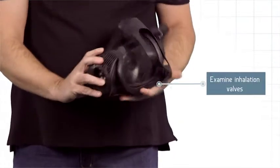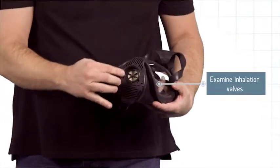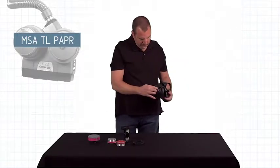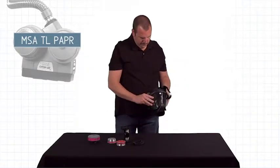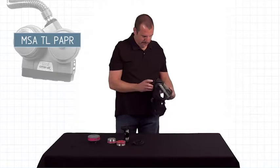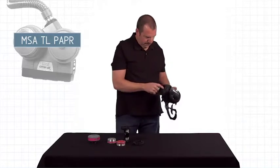After you've checked the sealing surfaces, inspect the inhalation valve and gasket. Verify that the spider gasket is in place. Then ensure that the inhalation valve is pliable by blowing gently into it.